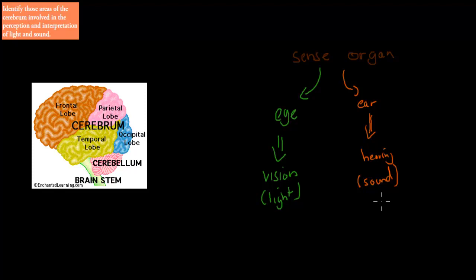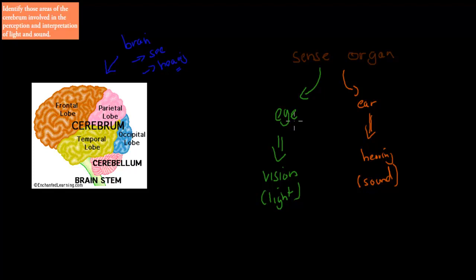We haven't talked about yet the brain itself, which is also responsible for both vision and hearing. Whilst the eye and the ear detect vision and hearing respectively, we still need to bring that message to the brain for interpretation. So the brain is the organ for actual seeing and hearing — without the brain, we wouldn't be able to interpret the message picked up by the eye and the ear.